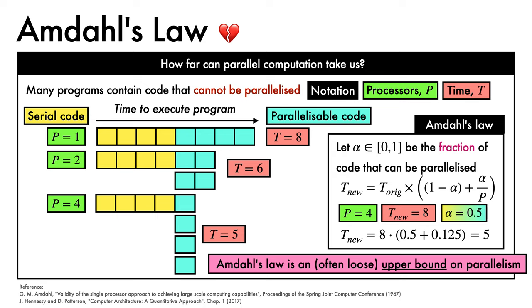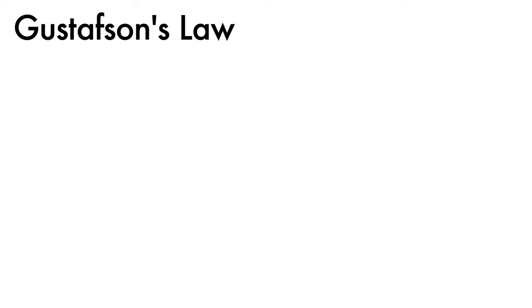We typically have other constraints between parallel components that mean we get even less speedup than this. It's all looking rather bleak. What can save us? Another law — this time, it's Gustafson's law to the rescue.